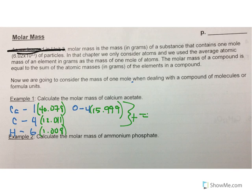That gets me a total mass of 158.166, and that is grams per mole of Ca(C2H3O2)2. I'm out of room. Put the formula on there. I'm out of room. Alright?